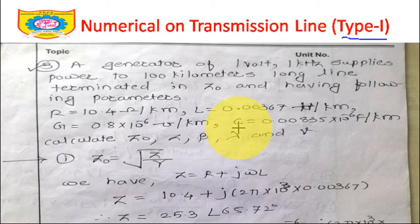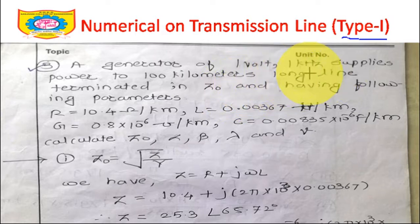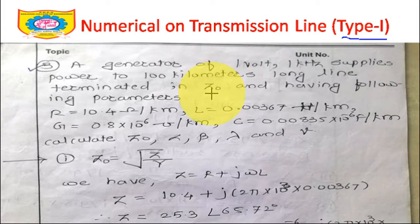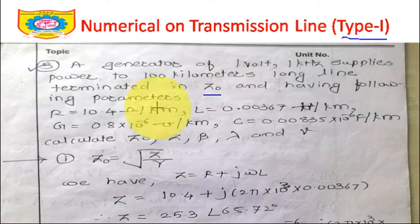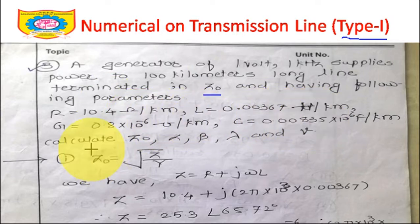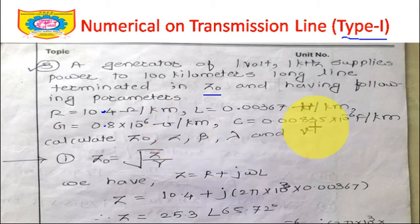The first problem: a generator of 1 volt at 1 kilohertz supplies power to a 100 kilometer long line terminated in Z0 — the characteristic impedance — with the following parameters. Since it is terminated in Z0, it can be treated as an infinite line. R = 10.4 ohm/km, L = 0.00367 Henry/km, G = 0.8 × 10⁻⁶ mho/km, C = 0.00835 × 10⁻⁶ Farad/km.